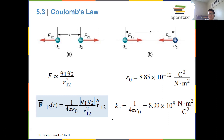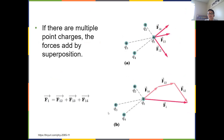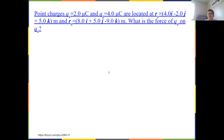It depends on whether you have like charges or opposite charges. If you have like charges, the force is repulsive; opposite charges give an attractive force. Sometimes you have more than two charges in space close to each other — for a particular charge you just add the electric forces from all other charges on that one in vector form, because forces are vectors.